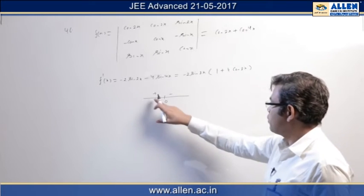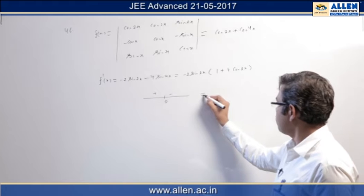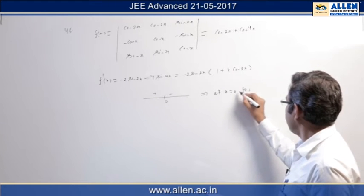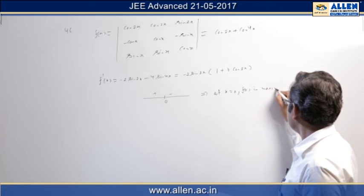So derivative changes from plus to minus. So at zero this implies at x equal to zero, f(x) is maxima.